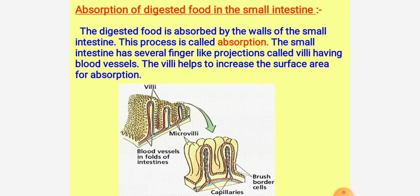These villi give the inner wall of the small intestine a very large surface area for the absorption of the digested food. Villi absorb the digested food material and pass them to the blood capillaries.